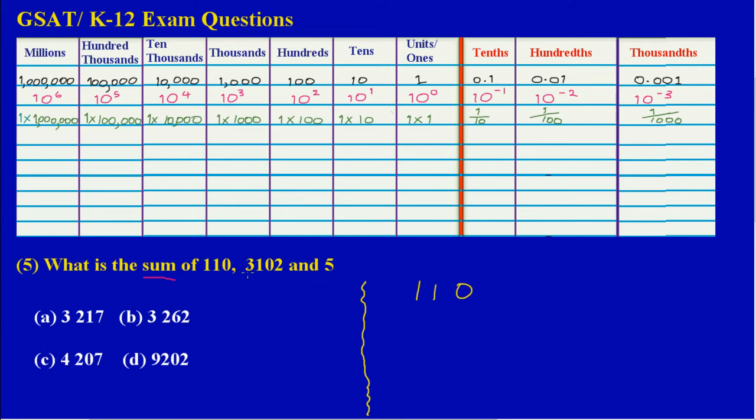The next number I have is 3102, so the 2 obviously would be in the units column, placed exactly under the zero. This zero here will fall in the tens column, the 1 would fall in the hundreds column.